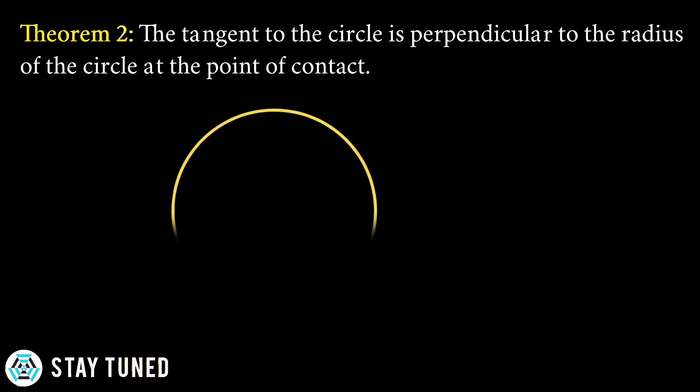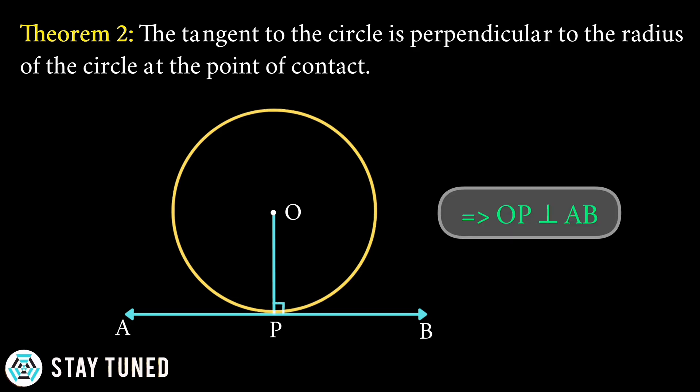So consider a circle, and we will draw a tangent AB to the circle at point P. We will draw line segment OP from the center O to the point P. Therefore, OP is perpendicular to AB from the above statement.